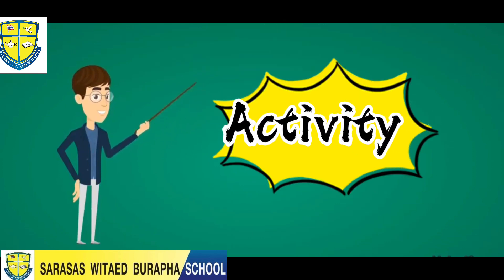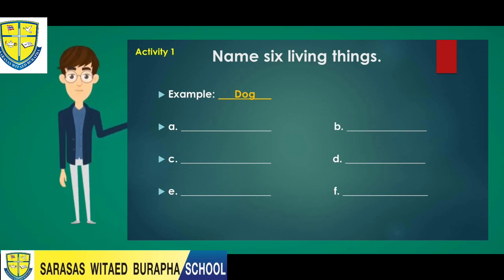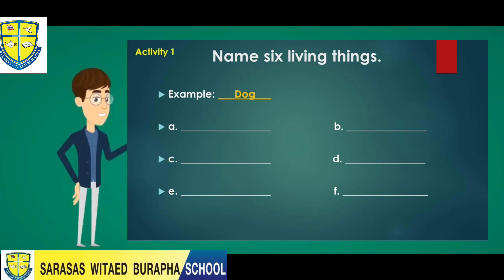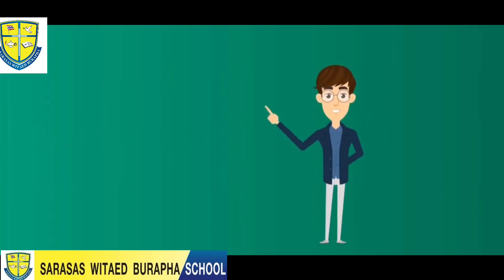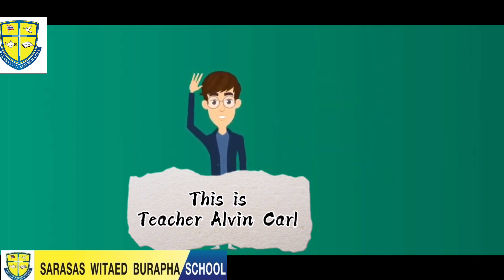Now you're ready to answer your activity. Don't forget to write your activities in your notebook. This is our first activity: name six living things, just like our example — dog — then fill in A, B, C, D, E, and F. After answering, please take a photo and send it to our group. Thank you for watching, hope you learned something new today. Always remember to wear your mask regularly and wash your hands often. This is Teacher Alvin — see you soon, bye bye!